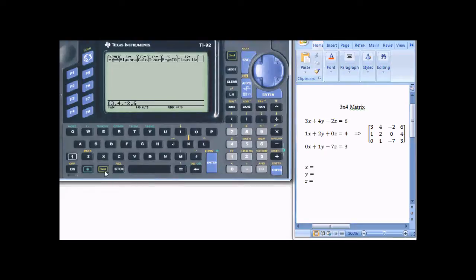Now we'll need a semicolon to separate the rows. 2nd and it's over the M. Now the numbers in the 2nd row. 1, 2, 0, 4.